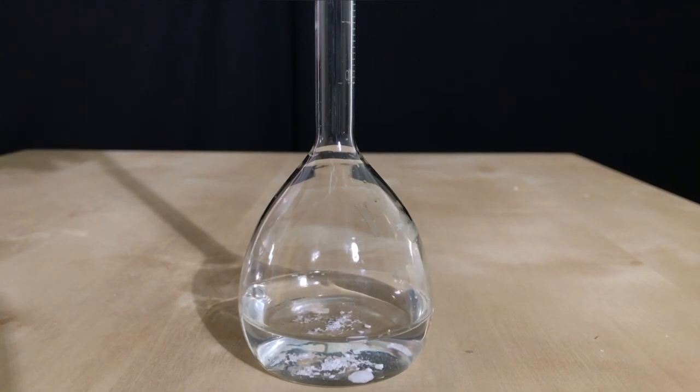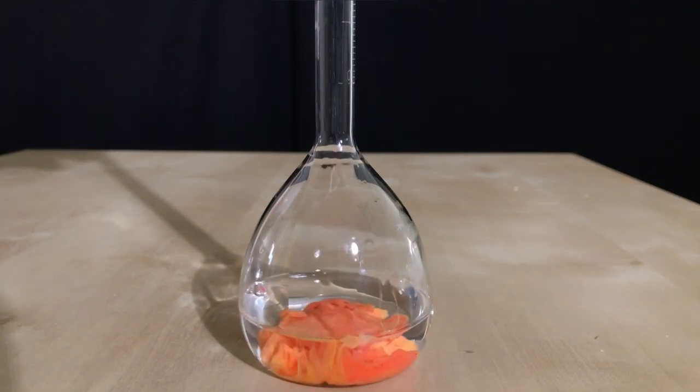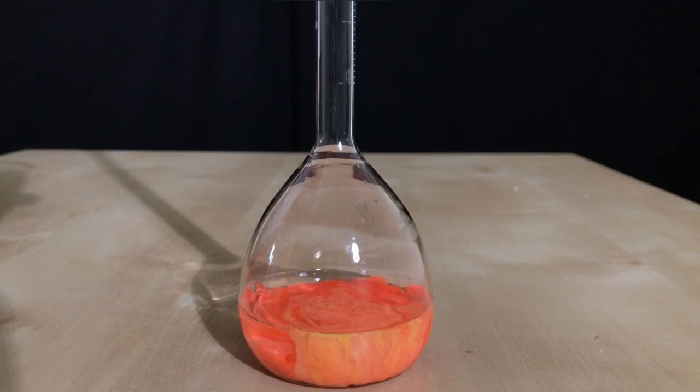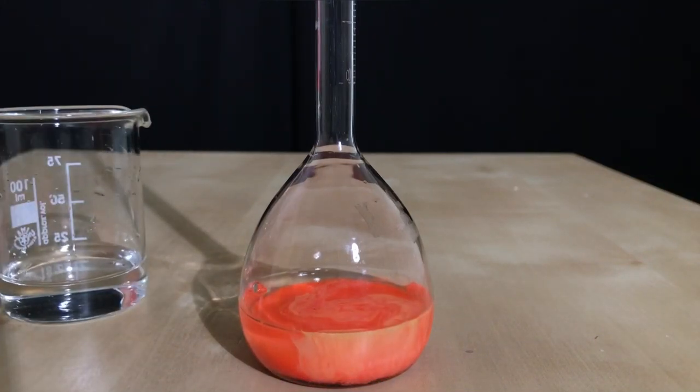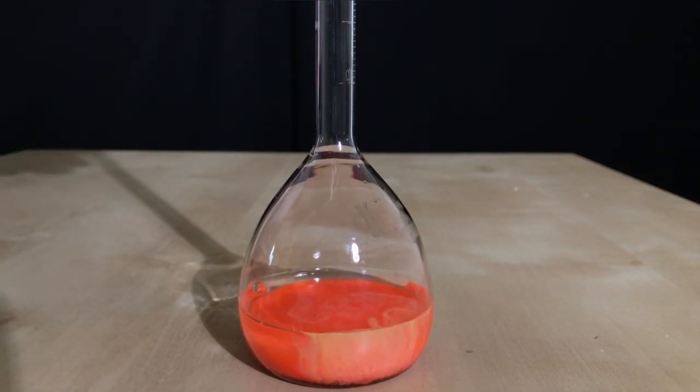Let's get to the fun part. Potassium iodide solution is added to mercuric chloride. As you can see this red precipitate immediately crashes out. This is mercury iodide.